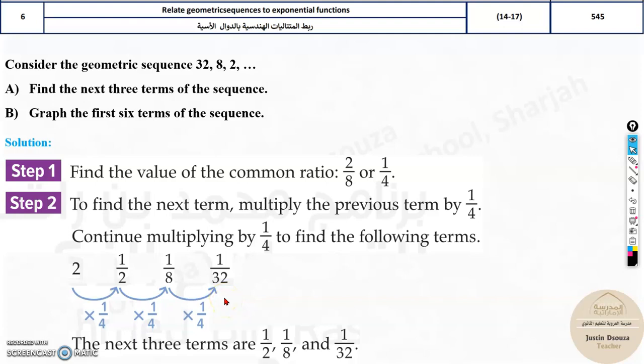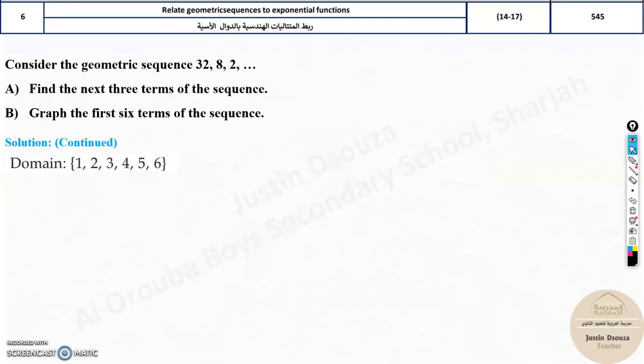It's not over. You need to graph them. When you graph them, the domain is always 1, 2, 3. It starts from 1 and it goes on until how many terms you're graphing. So here you have this domain because we have 6 terms to graph.